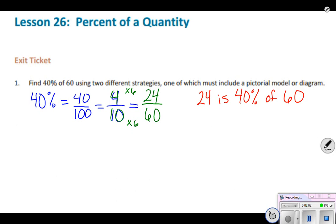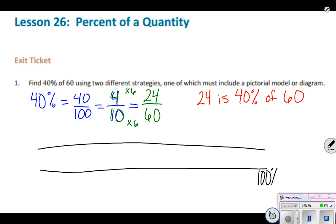Now, the other thing is just by using a quick double number line. With my double number line, I know 100% is equal to 60. So I've got zero here and then zero percent. I want to break it down so I can find 40%.